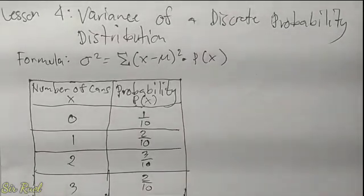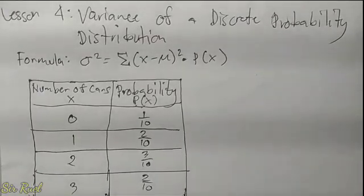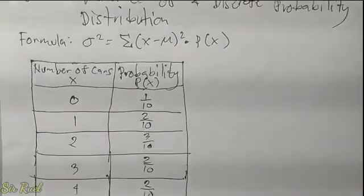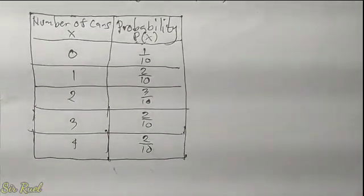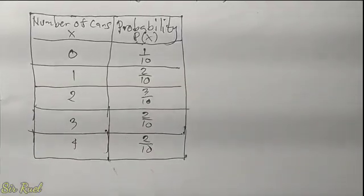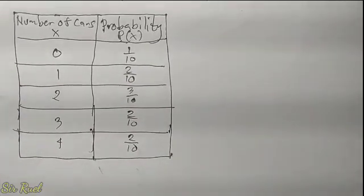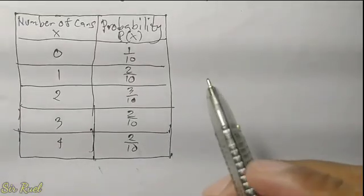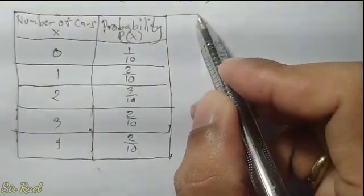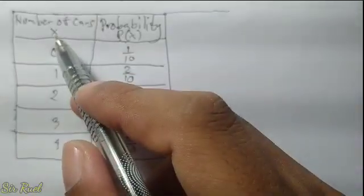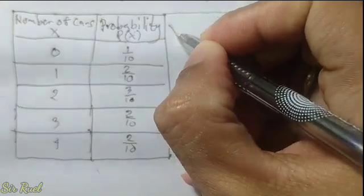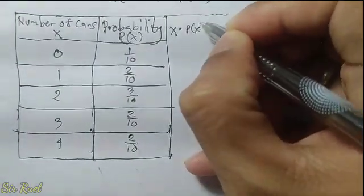For our example, suppose we have the number of cars sold in a day and its corresponding probabilities. The first thing we need to do is find the mean of the discrete probability distribution. To do that, we need to multiply x and p of x.